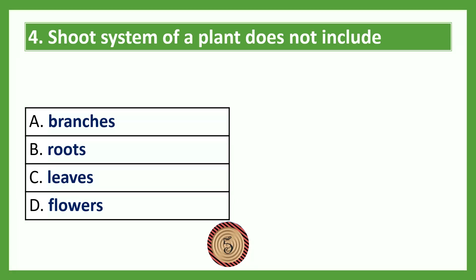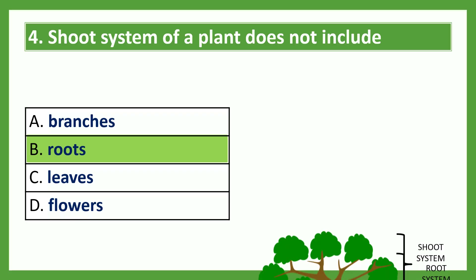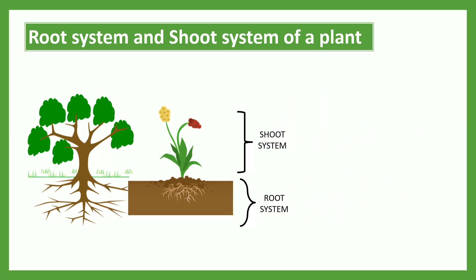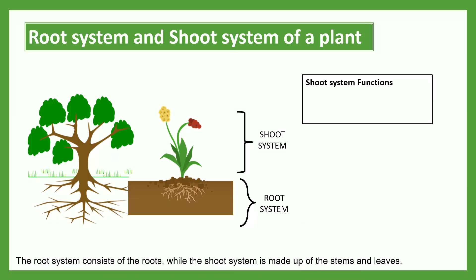The shoot system of a plant does not include — Option A: branches; Option B: roots; Option C: leaves; Option D: flowers. The answer is roots. You can see in the picture that the shoot system does not include the roots. The root system consists of the roots, while the shoot system is made up of the stems and leaves.